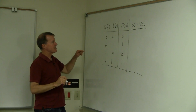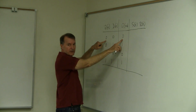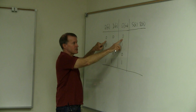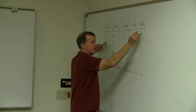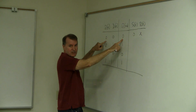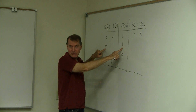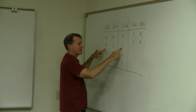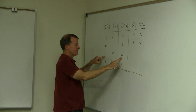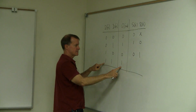So now what transitions are we looking at? From Q=0 to Q=0: by the excitation table, SR could be 0,0 or 0,1, so that's 0,X. From Q=0 to Q=1: SR has to set it, so that's 1,0. From Q=1 to Q=0: SR must reset it, so that's 0,1. From Q=1 to Q=1: SR could be 0,0 or 1,0, so that's X,0.